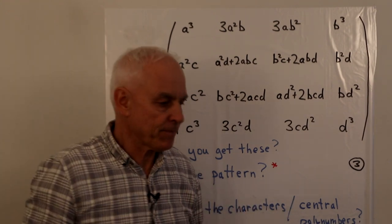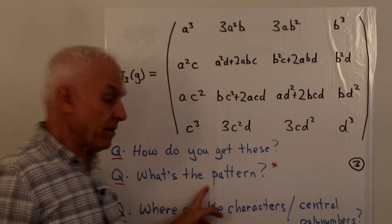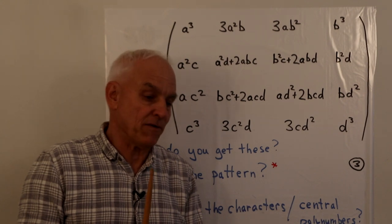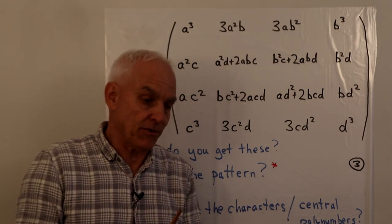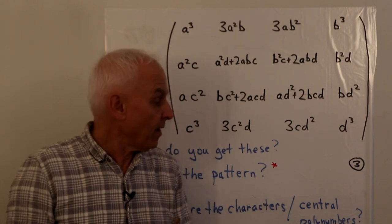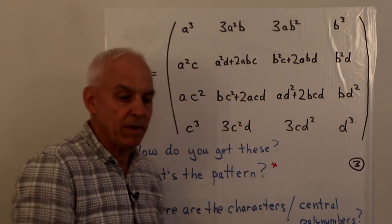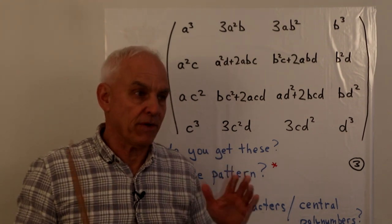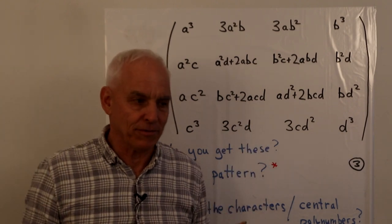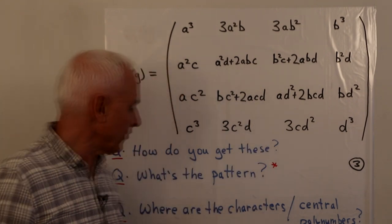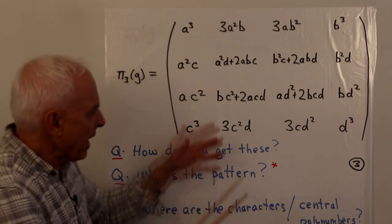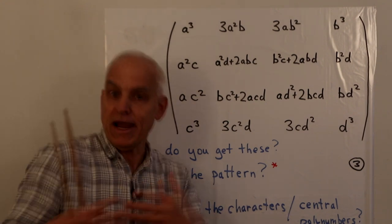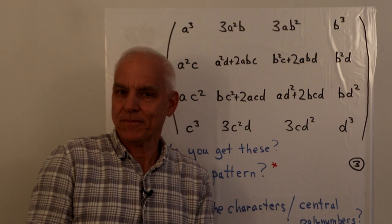I want to address that and give you a highly novel answer, which I think is really instructive for students of Lie theory and modern physics. I would have loved for someone to have shared this with me when I was a first-year graduate student — it would have opened my mind to a whole better way of thinking. A final question: where are the characters? What do we mean by characters, and where do the central polynumbers come in? We're going to do that now, and I'll shift to Scientific Workplace.